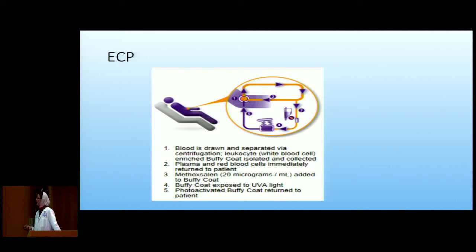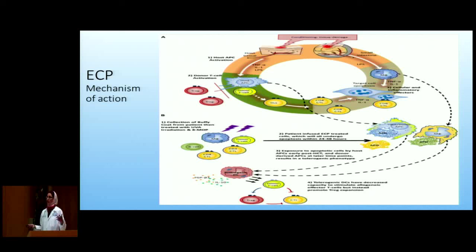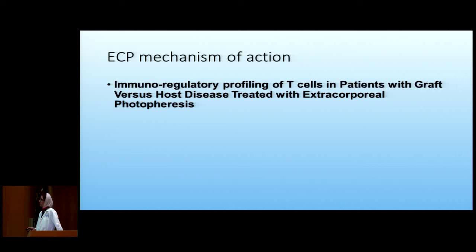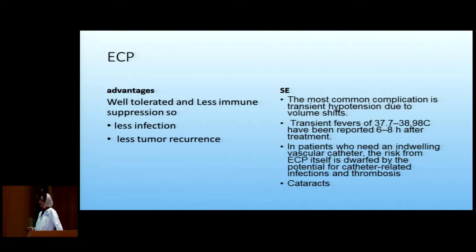ECP — extracorporeal photopheresis — involves taking blood from the patient, separating it so red blood cells go back to the patient, while we take the buffy coat with the cells of interest and expose them to ultraviolet light, then return them to the patient. The mechanism of action, though used for a long time, is not completely known. They think that exposing the active donor T cells to ultraviolet light causes apoptosis, and when exposed to APCs, induces tolerance and increases Tregs, thereby decreasing GVHD. ECP is well tolerated, causes less immune suppression, less infection, and may result in less tumor recurrence. Side effects are minor: some hypotension, transient fever for six to eight hours, and catheter-related infection risk. Patients also need protective glasses due to UV exposure risk of cataract.